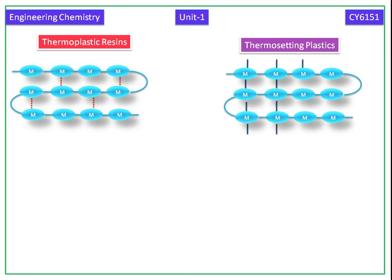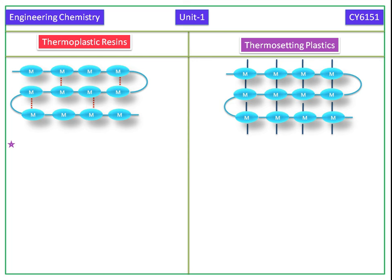In thermosetting plastics, all the bonds are strong and covalent. Thermoplastic resins are prepared by addition polymerization. Thermosetting plastics are prepared by condensation polymerization.